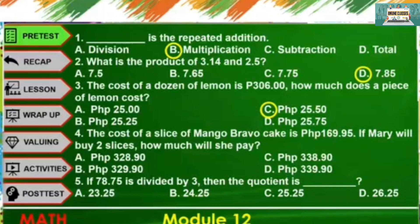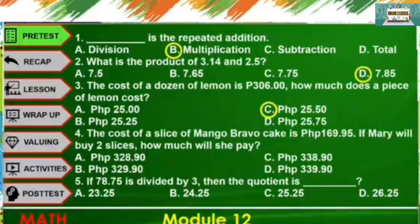Number 4: The cost of a slice of mango bravo cake is 169 pesos and 95 centavos. If Mary will buy 2 slices, how much will she pay? A. 328 pesos and 90 centavos, B. 329 pesos and 90 centavos, C. 338 pesos and 90 centavos. The correct answer is D, 339 pesos and 90 centavos.